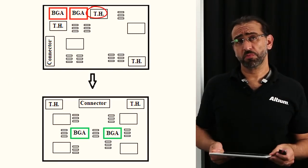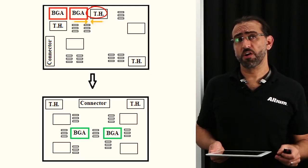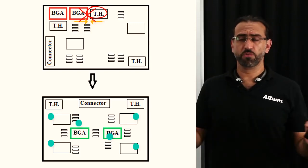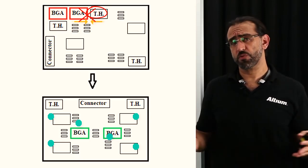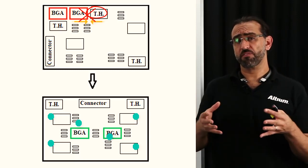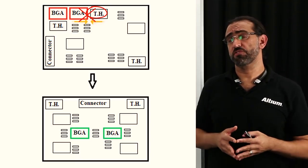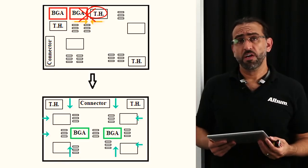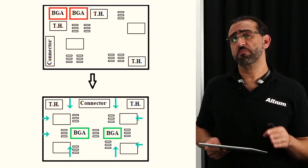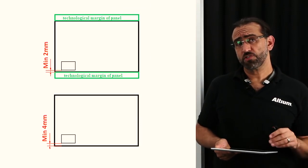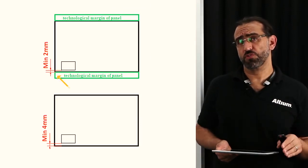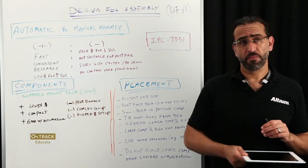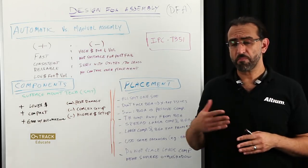It's also not recommended to place through-hole components near BGAs, as they often require different soldering temperatures. It's a best practice to distribute your large components and BGAs throughout your board — this helps keep weight evenly distributed and prevents bending, or bowing, of your board. Along the same line, always keep your large components and BGAs away from the board edges, as board edges have a higher melting temperature than the middle of the board. Components should always be placed no closer than two millimeters from the board edge if you are using stripline technology, and at least four millimeters if you're not using stripline technology.